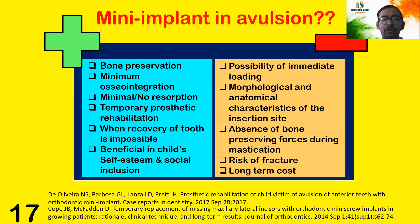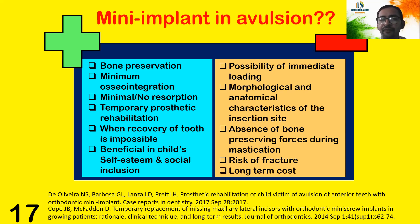The advantages of using mini implants include bone preservation, minimal osseointegration, minimal or no resorption, and the ability to provide temporary prosthetic rehabilitation. Recovery is possible — the screw can be removed at any time without removing unnecessary bone, and immediate loading is possible. It has good morphological and anatomical characteristics at the insertion site, with absence of bone-preserving forces during insertion. However, there is a risk of fracture and potential long-term costs.